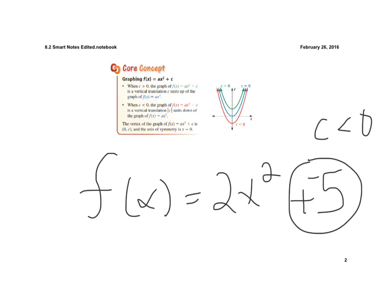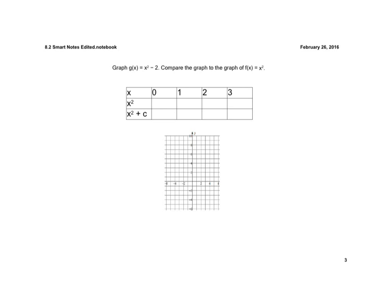The vertex of a graph in the form f of x equals A times x squared plus C is just the value 0 comma C, because we haven't shifted the graph left or right. So the vertex still has the x-coordinate of 0, but the y-coordinate would now be C. So if we're going to graph this, we're going to compare it to the graph of y equals x squared, which just goes right through the origin, 0, 0.